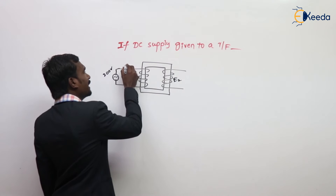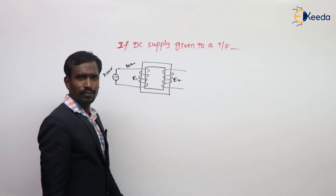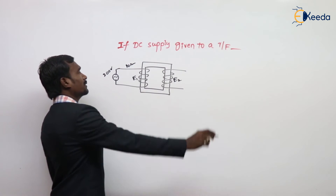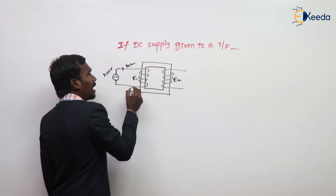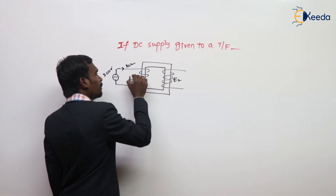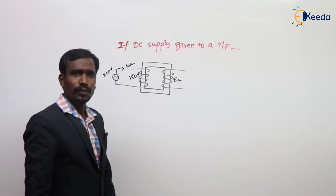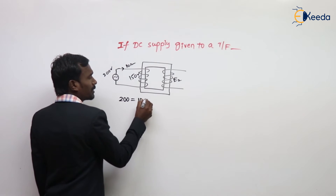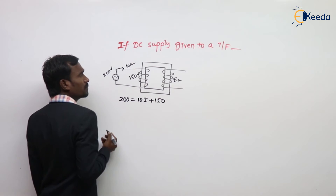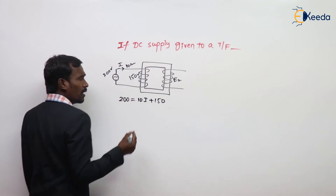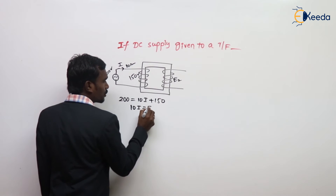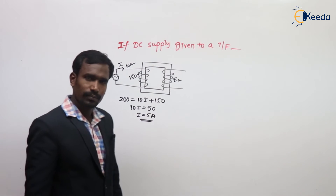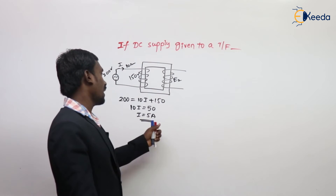For example, here 200 volts is given, and my winding has 10 ohms of impedance. Some current is flowing and some EMF is induced. The loop equation is: 200 = 10×I + 150, so 10×I = 50, and I = 5 amperes. Let's say 5 amperes is the rating of my winding.